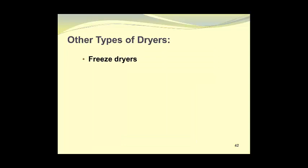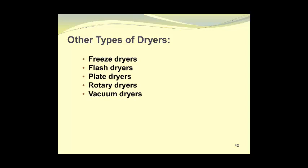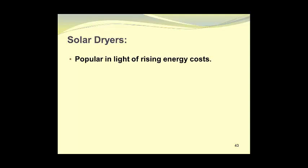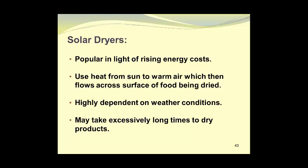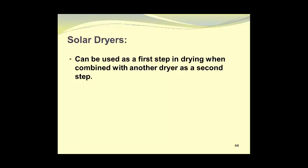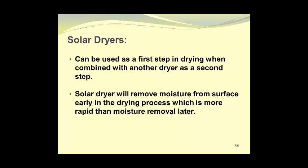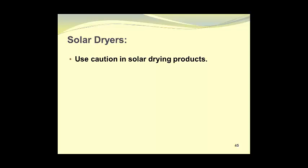Other types of dryers include freeze dryers, flash dryers, plate dryers, rotary dryers, vacuum dryers, rotoluver dryers, and solar dryers. Solar dryers are an interesting case in themselves. They are popular in light of rising energy costs. They use heat from the sun to warm air which then flows across the surface of the food being dried. They are highly dependent upon weather conditions and may take excessively long time to dry products. Solar dryers can be used as a first step in drying when combined with another dryer as a second step. The solar dryer will remove moisture from the surface early in the drying process, which is more rapid than moisture removal later on.